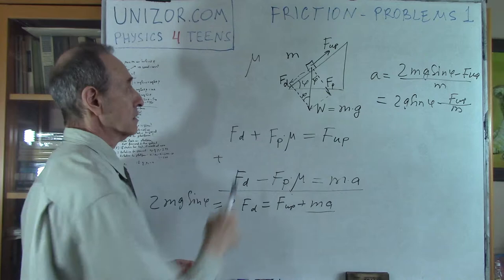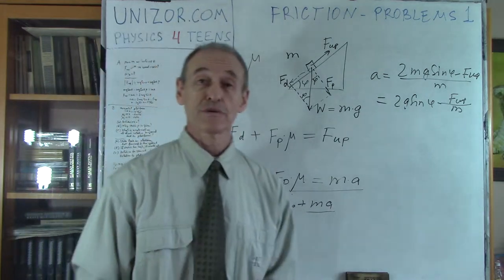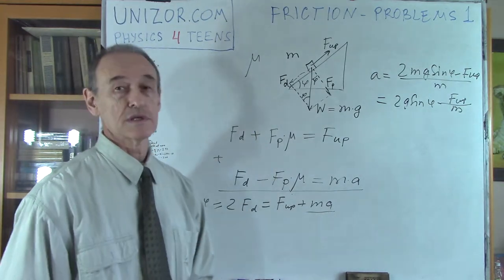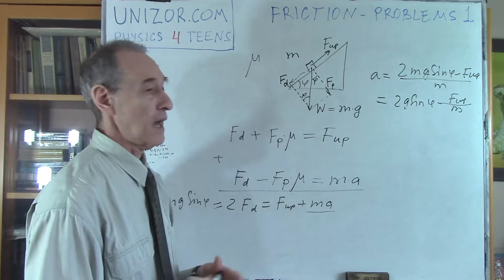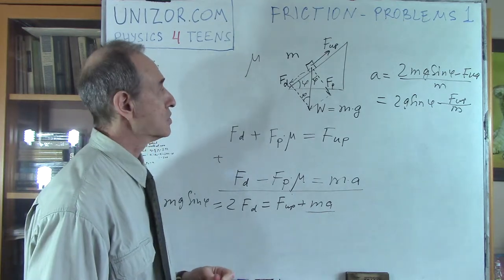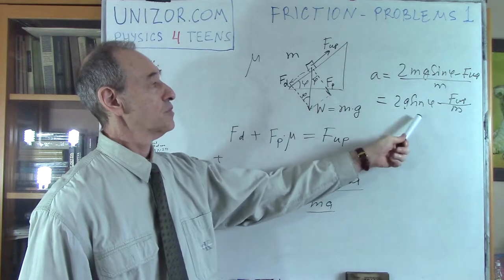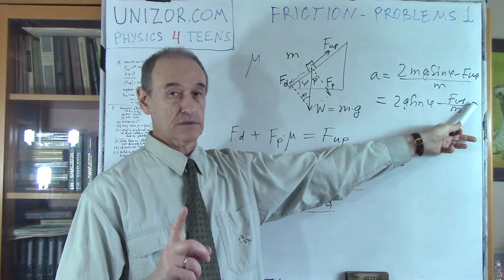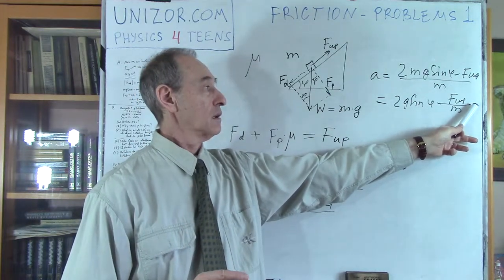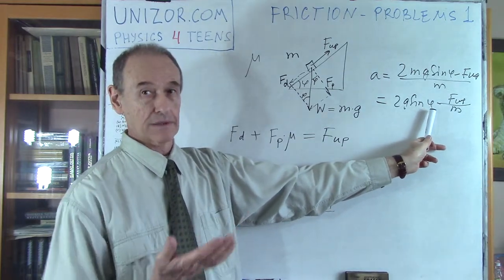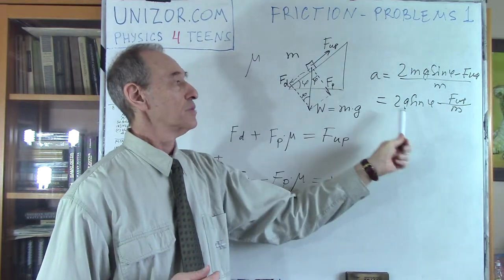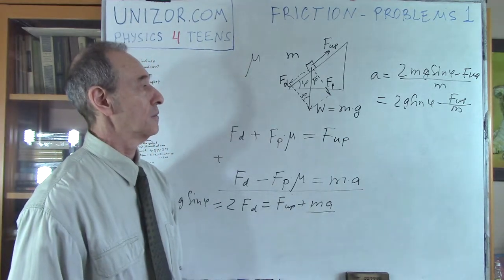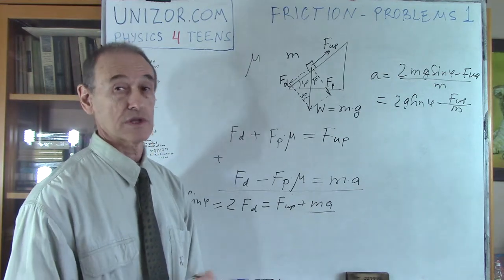Interestingly, this result is independent of mu, the coefficient of friction. Whether the coefficient is high or low, it doesn't matter — the acceleration depends only on g, phi, and the force F-up needed to pull the object uphill at constant velocity. That is the acceleration of the object's free sliding downhill with friction.